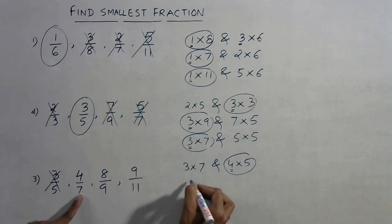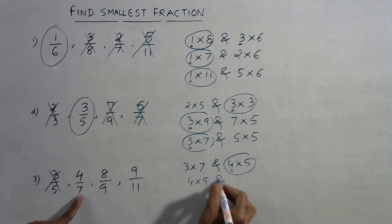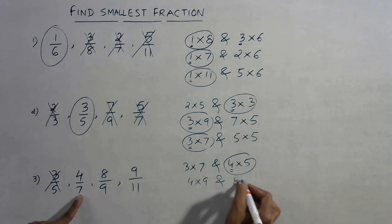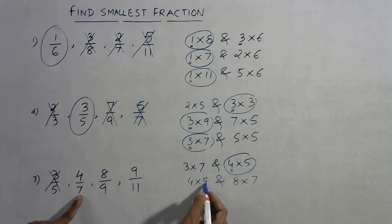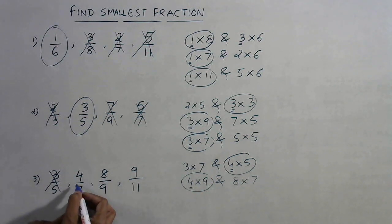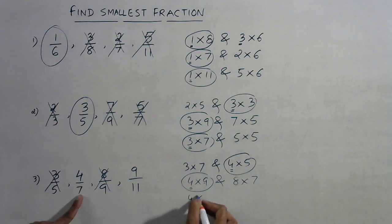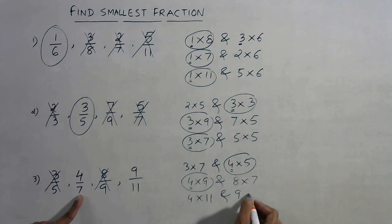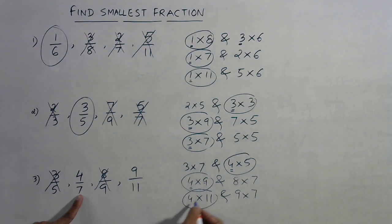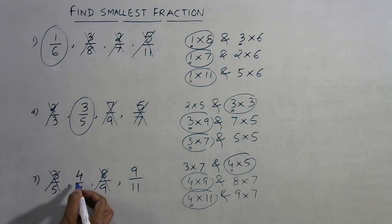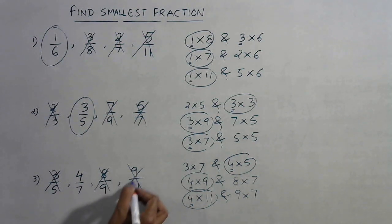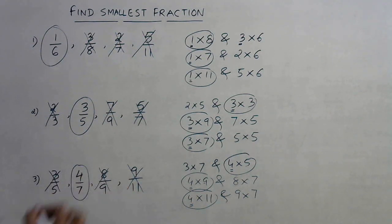Now compare 4/7 and 8/9: 4 into 9 is 36 and 8 into 7 is 56. Since 36 is smaller, numerator 4 is retained and 8/9 is discarded. Finally, 4 into 11 is 44 and 9 into 7 is 63. Since 44 is smaller and 4 is the numerator, this is the smaller fraction — discard the other to get the answer as 4/7.